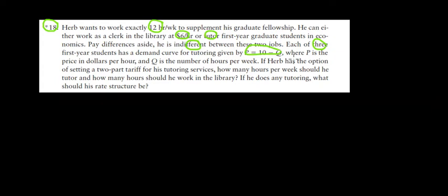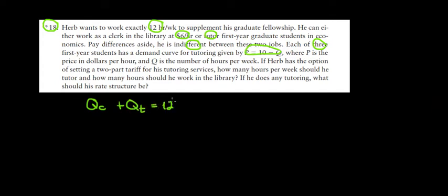If we have the option of setting a two-part tariff for tutoring: how many hours should we tutor, how many hours should we work as a clerk, and what would be the price for our tutoring? We have two options — working as a clerk and working as a tutor — and the quantity of clerk hours plus the quantity of tutor hours must total 12 hours.